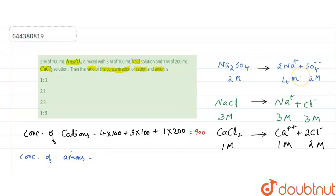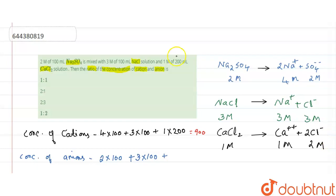Now for the concentration of anions. Sulfate from sodium sulfate: two molars in 100 ml, so two into 100 gives 200. Chloride from sodium chloride: three molars in 100 ml, so three into 100 gives 300. Chloride from calcium chloride: two molars in 200 ml, so two into 200 gives 400. Adding: 200 plus 300 plus 400 gives 900.